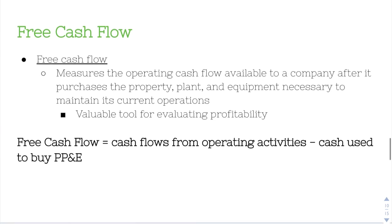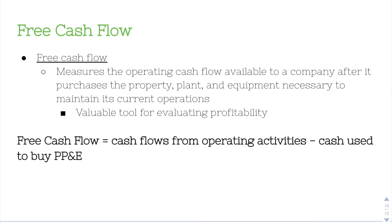And then free cash flow. Free cash flow measures the operating cash flow available to a company after it purchases the property, plant, and equipment necessary to maintain its current operations, and it's a very valuable tool. The formula is: free cash flow equals cash flows from operating activities minus cash used to purchase PP&E.